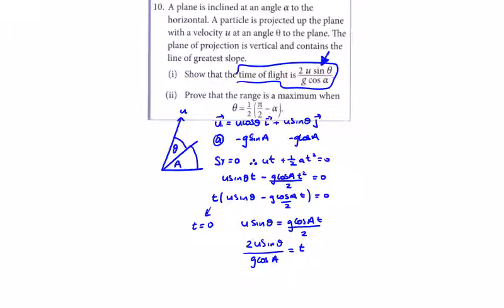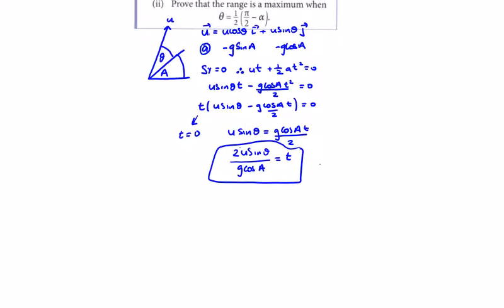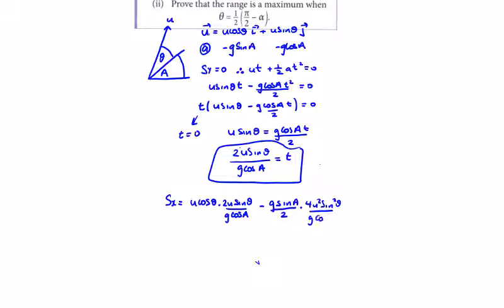Now we need to prove that the range is a maximum. So we're looking for s of x, and we plug the time of flight into s of x when theta equals the given expression. The s of x expression is u cos theta times t, where t is 2u sin theta over g cos alpha, plus a half times the acceleration minus g sin alpha times t squared.